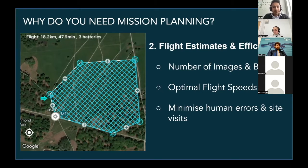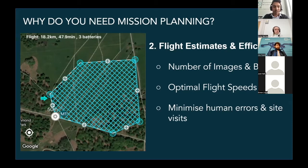The third benefit is minimizing human errors on site. Mission planning allows you to pre-program your flight — similar to using Google Maps to build an understanding of what a site looks like and what the hazards might be. You can use mission planning to understand what the drone needs to do in flight and pre-program that, so if the drone deviates or does something unexpected, you have a good idea of what to do in that moment.